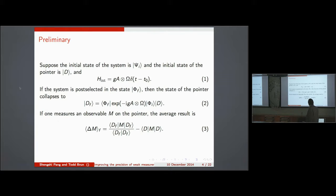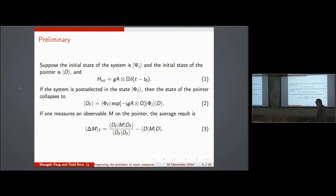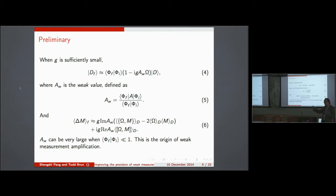After a successful post-selection, we've prepared a new state of the pointer D_F and we measure some observable M on the pointer. The expectation value of M is given by an expression where we renormalize, and we can look at the change in M due to the interaction. In the linear response regime where G is very small, we expand the exponential, and the weak value appears. To remain in this linear regime, G times A_W times Omega must be small.